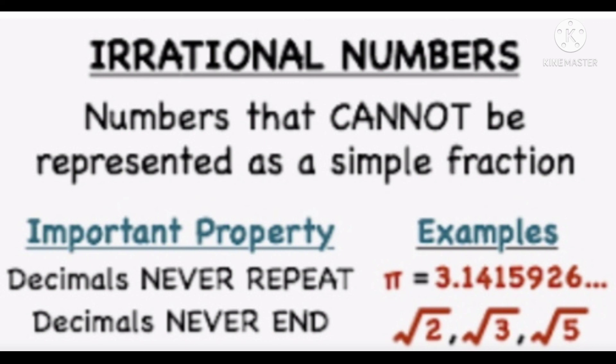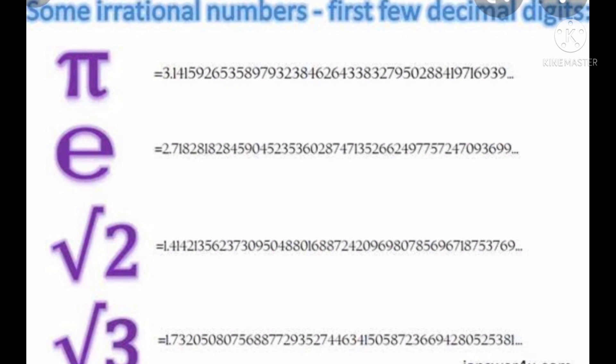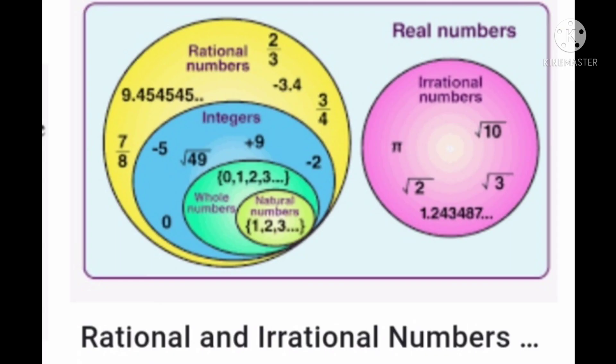Important properties of irrational numbers: decimals never repeat and decimals never end. For example, pi is equal to 3.14159265... and so on. Root 2, root 3, and root 5 are also irrational numbers. So pi, e, root 2, and root 3 are also irrational numbers. Students, this is the complete picture of types of numbers as a part of real numbers.